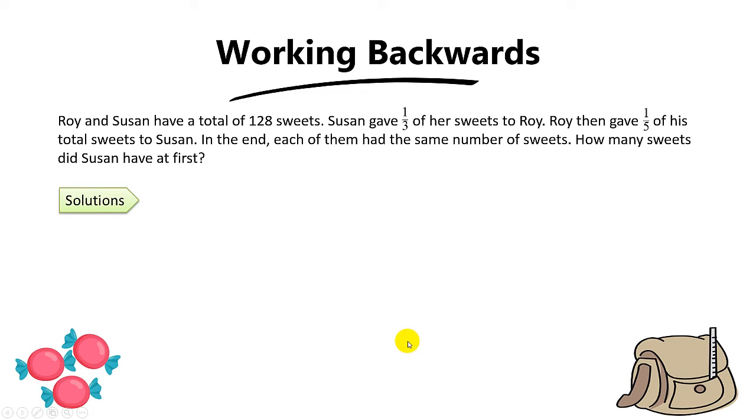The next question that we're going to revise is under working backwards. So let's go through this question. Roy and Susan have a total of 128 sweets. Susan gave one third of her sweets to Roy. Roy then gave one fifth of his total sweets to Susan. In the end, each of them had the same number of sweets. How many sweets did Susan have at first?